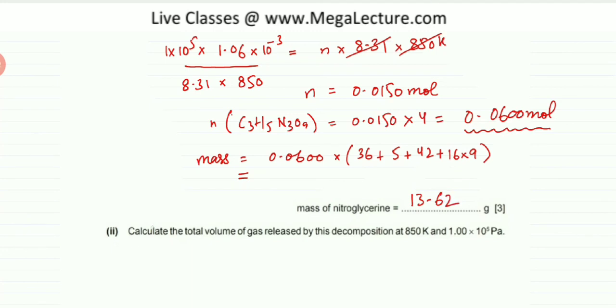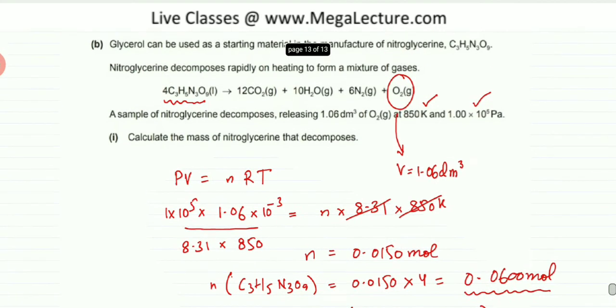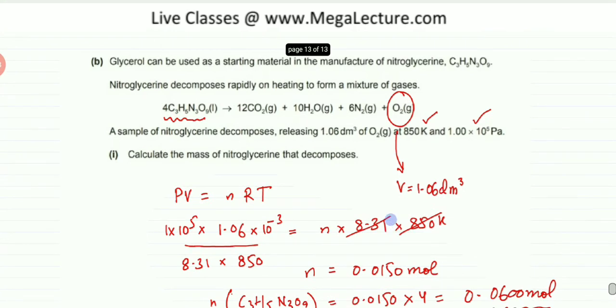Now the other part of the question, part 2, the question states, calculate the total volume of gas released by this decomposition at 850 Kelvins and 1×10⁵ Pascals. Now we're being asked to find the total volume of gas. One easy way to figure out the total volume of gas, and that's what we're going to do, that's a shortcut.